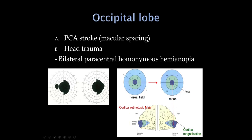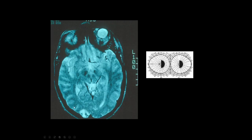Getting back to the occipital lobe: with a PCA stroke, macular sparing occurs because the macular fibers are right back at the tip of the occipital lobe. If someone has trauma and hits the back of their head, they may get bilateral paracentral homonymous hemianopia. Here's a case of head trauma that affected the tip of the right occipital lobe, resulting in a central left visual field deficit.